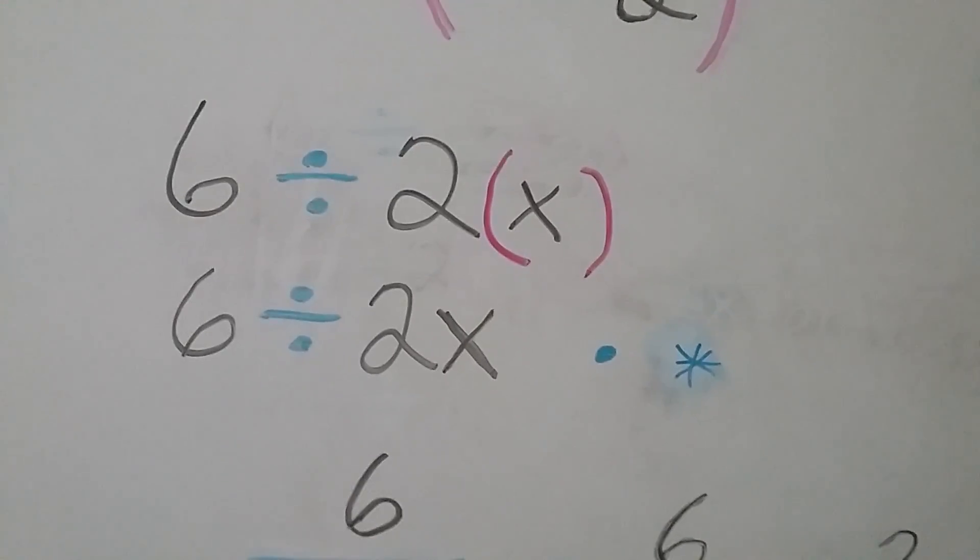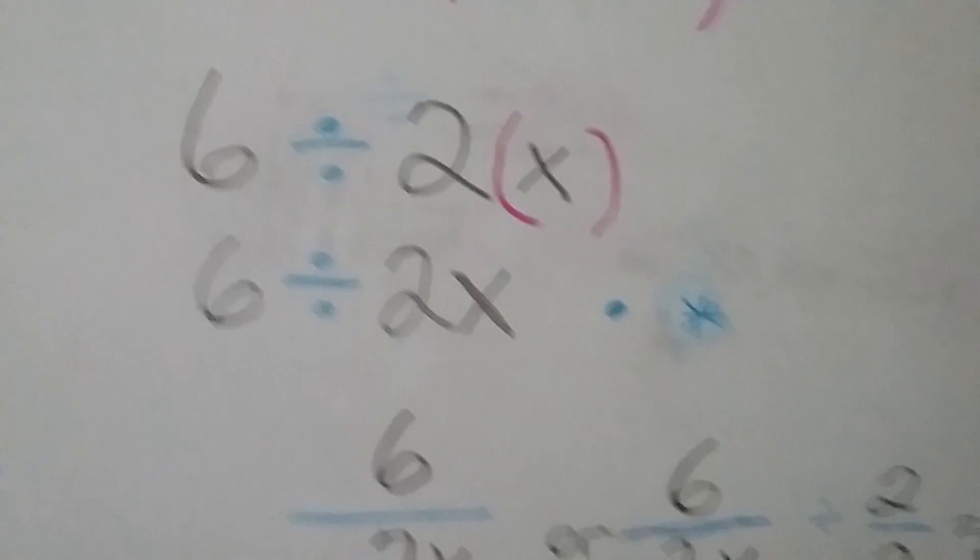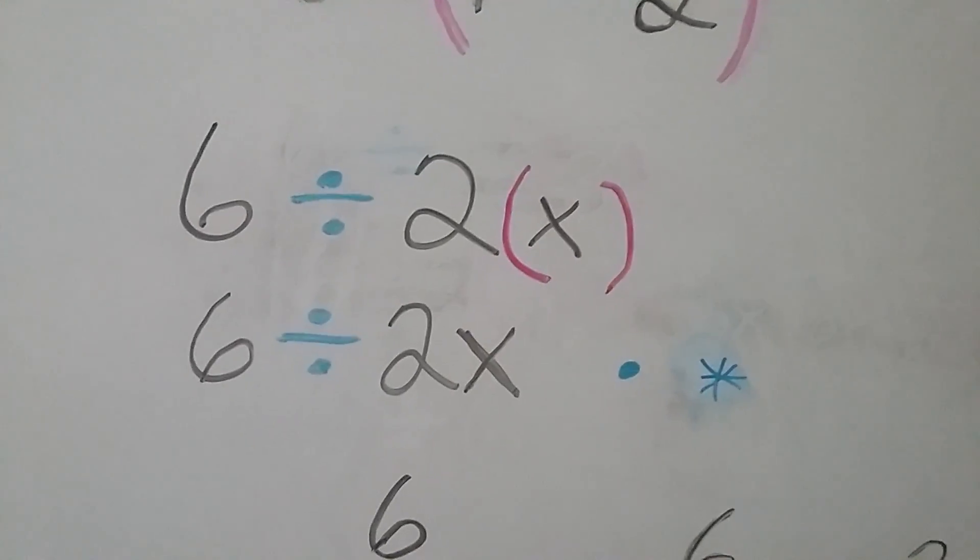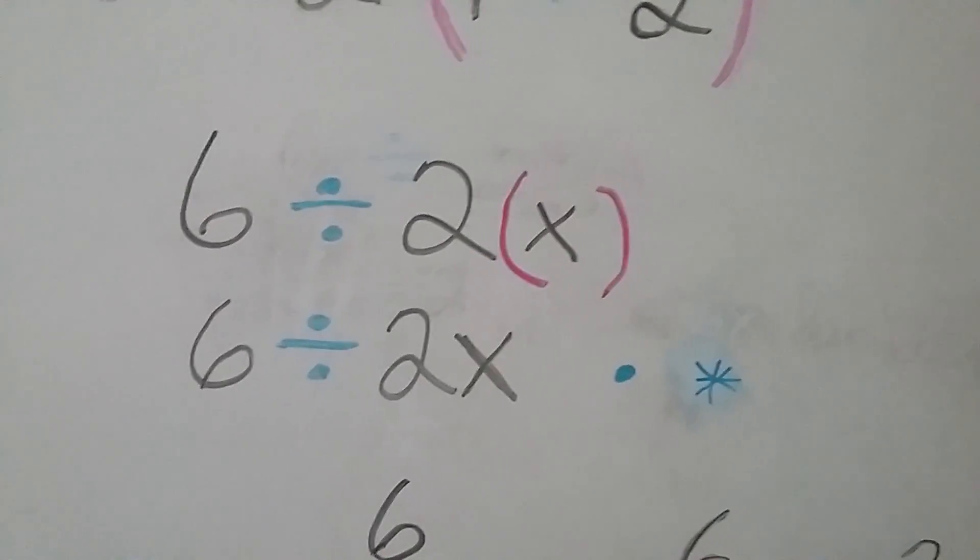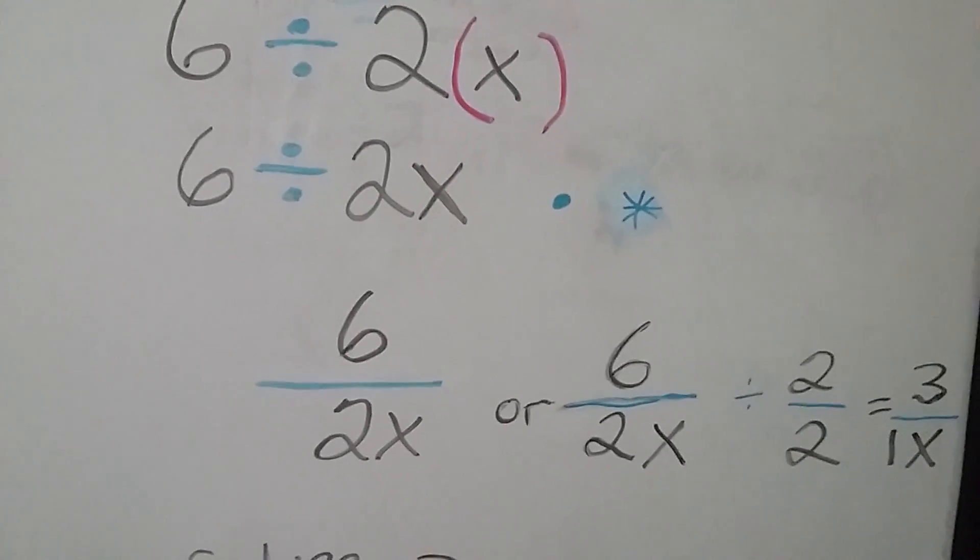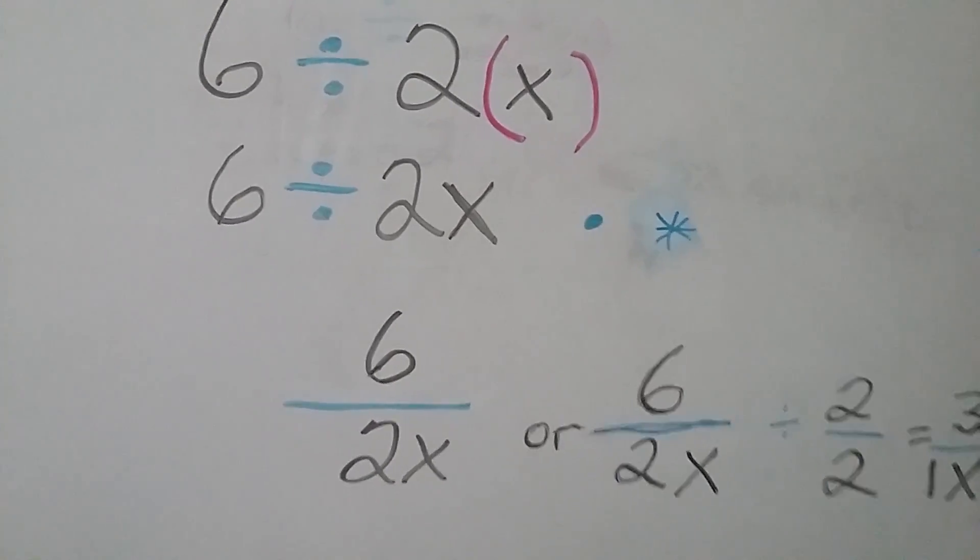But we no longer have those signs when we do algebra. You can't use an x as a sign for multiplication in algebra because it gets confusing with your variables x. Okay, now when you divide, you can take that 6 divided by 2x and turn it into what looks like a fraction.